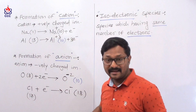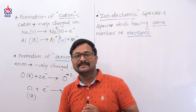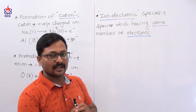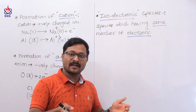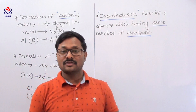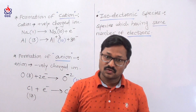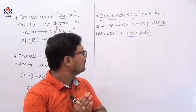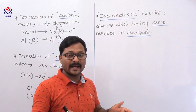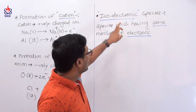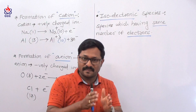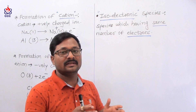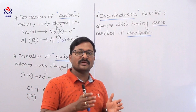This is the formation of cation and anion. Now the next and important concept is isoelectronic species. What is meant by 'iso'? Iso means same, and electronic means electrons. So the species which have the same number of electrons are called isoelectronic species.